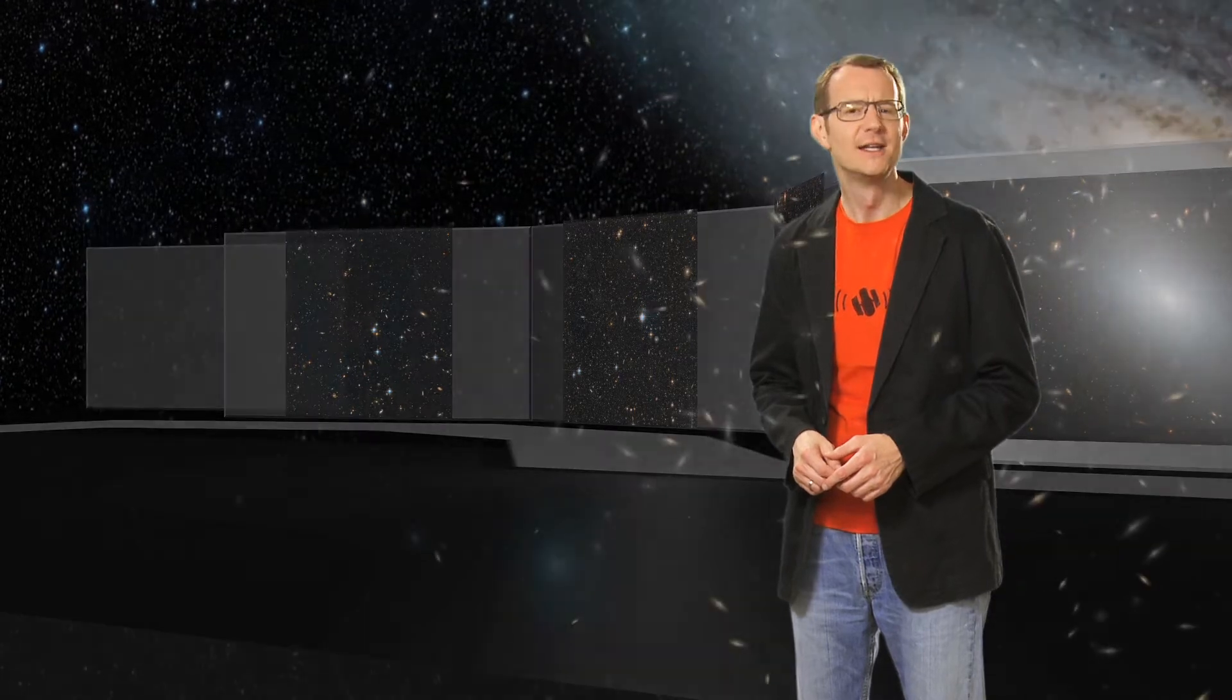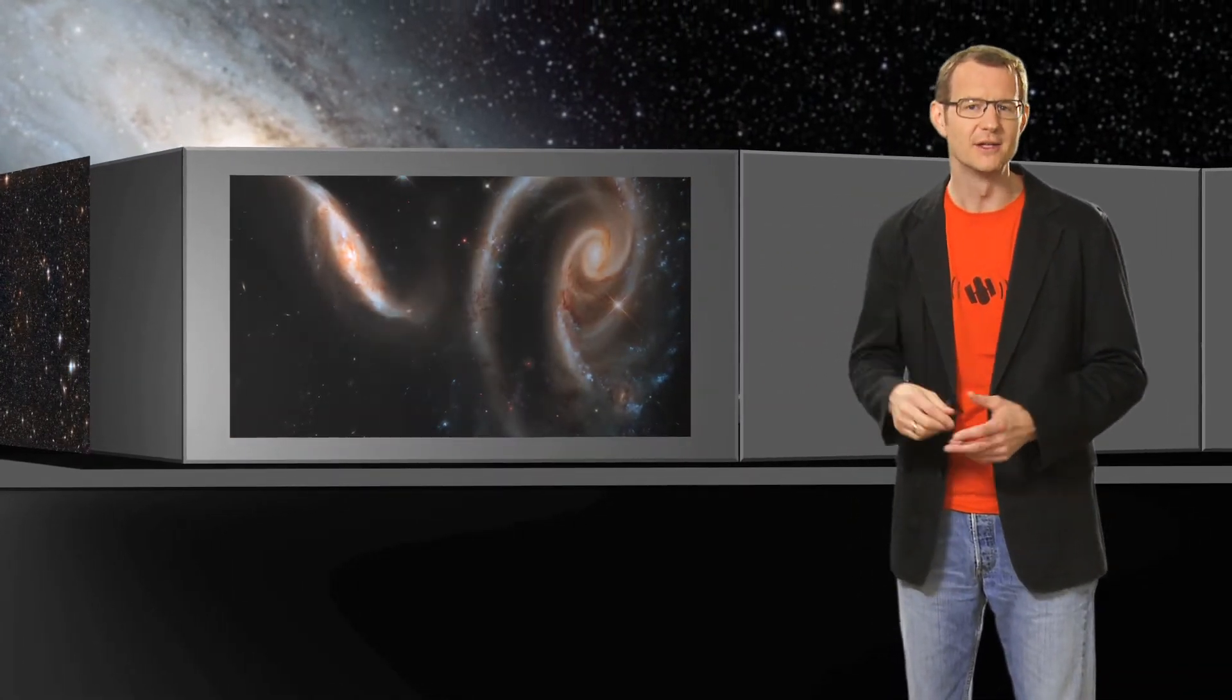Hello and welcome to another episode of the Hubblecast. Astronomers have observed millions and millions of galaxies across the night sky. But only a tiny fraction of them, only a few tens, are actually close enough to us so that we can distinguish the individual stars that they're made of. And that's what makes this small group of galaxies kind of special for us astronomers.